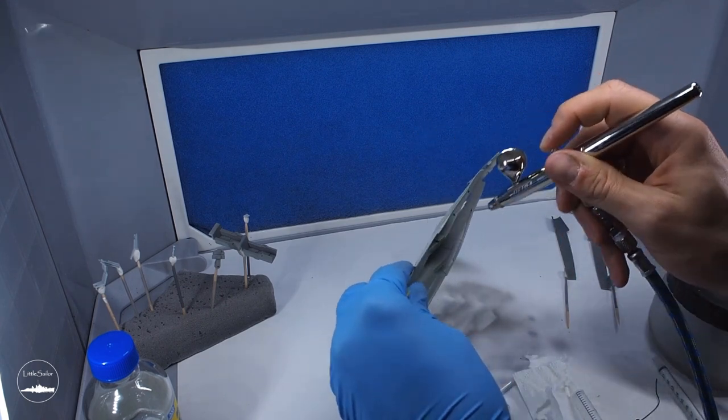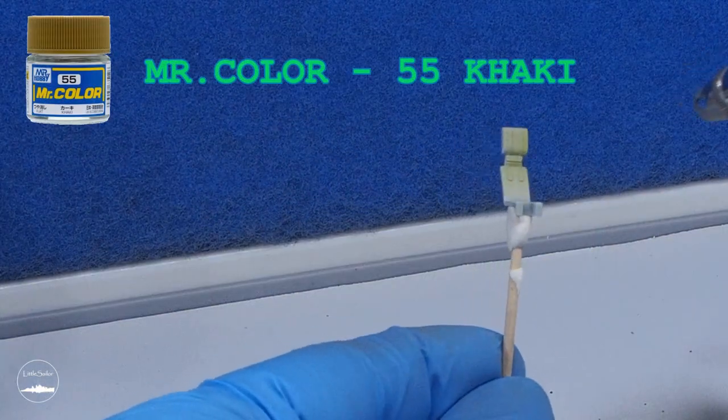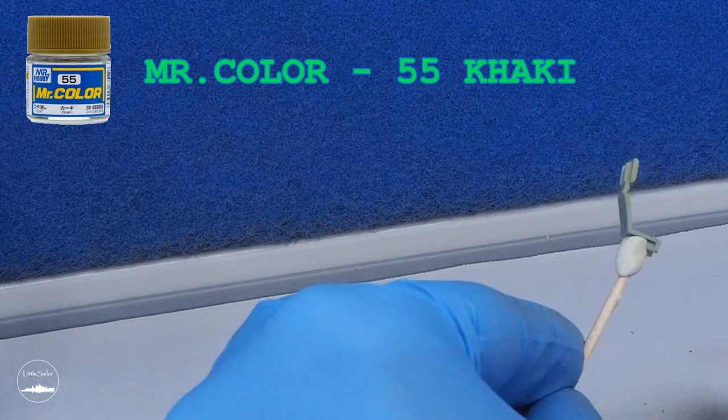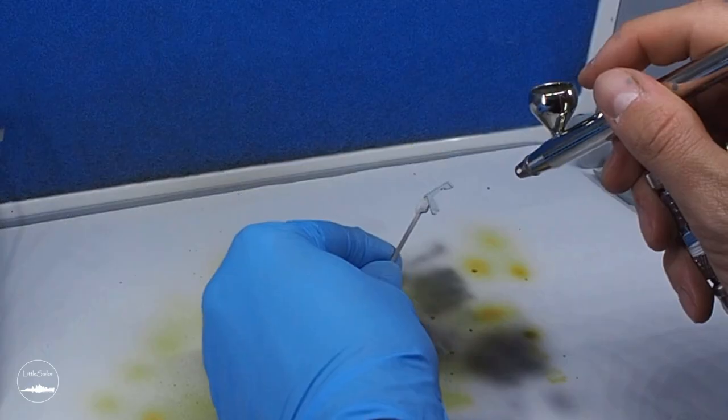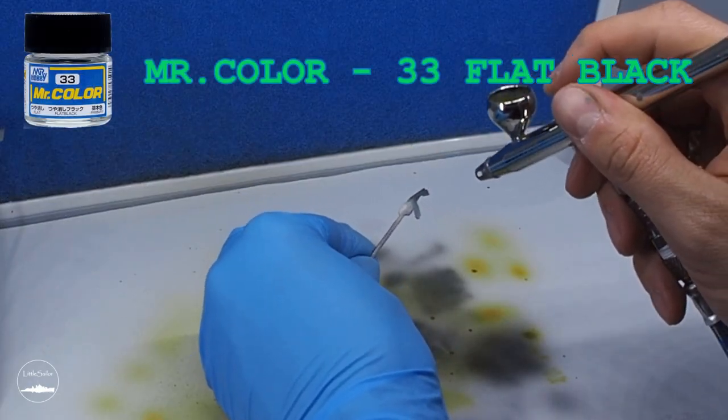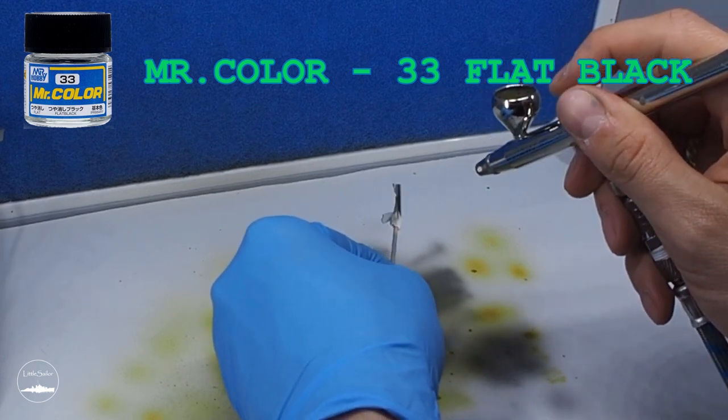The pilot's chair and basically the seat and the backrest according to the instructions are painted in khaki color 55, and the chair frame itself is matte black with the number 33.